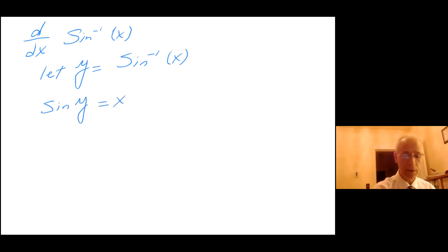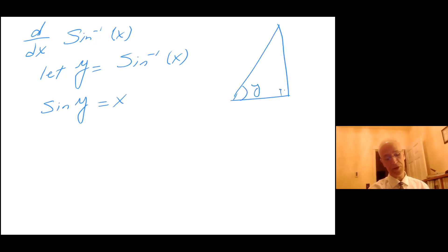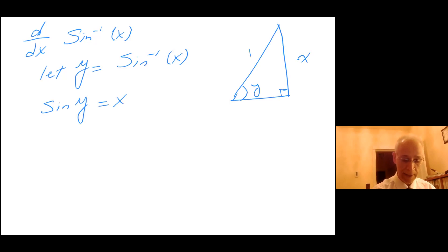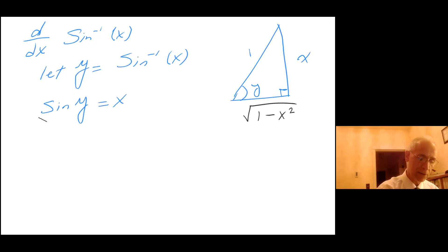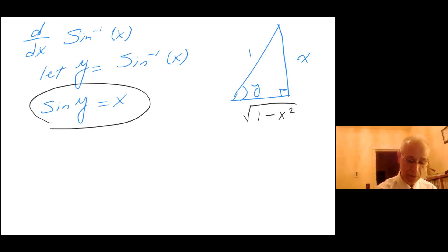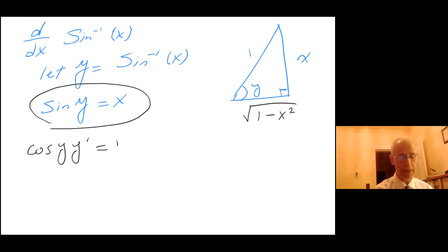This means that sine of y equals x. If we have some angle y, by definition sine is side opposite over hypotenuse, so this is x, the hypotenuse is 1, and that leaves the adjacent side as square root of 1 minus x squared. Taking the derivative implicitly from both sides, I get cosine of y times y prime equals 1.